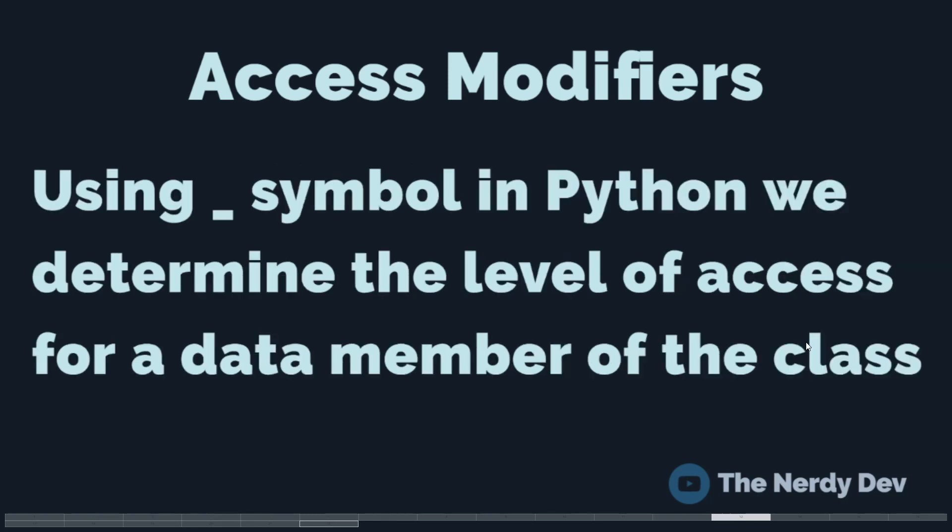Now in Python, we make use of the underscore symbol to determine the level of access for a specific data member or a method of a class. The need for the access modifiers was realized because this prevents unauthorized access to your attributes and methods and helps prevent them from getting accidentally mutated.